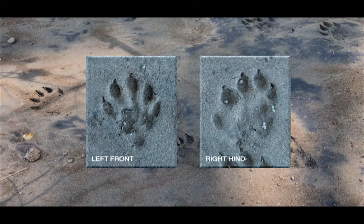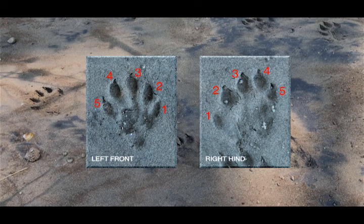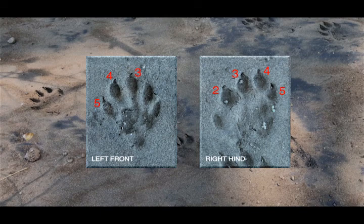Now let's look at these tracks from the toes to the heel. Both front and hind feet tend to show five toes on each foot — of course, this depends on substrate. Beginning from the inside toe of each foot, we have toe 1, toe 2, toe 3, toe 4, and toe 5. Everywhere you see a point on a toe, that is a claw. So on the front foot, there is a claw on toes 3, 4, and 5. On the hind foot, there are claws showing on toes 2, 3, 4, and 5. As you can see, not all of these toes are showing claws in this substrate.